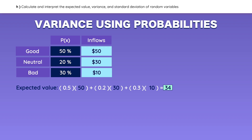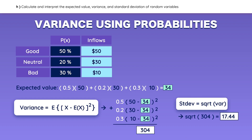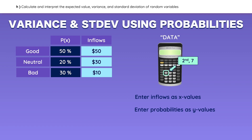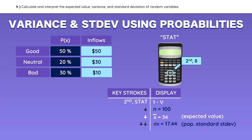To calculate the variance, you need to use the following formula. You can actually use the calculator instead — access the data function and enter the inflows as X values and the probabilities as Y values. Be careful: the probabilities must be entered as whole numbers, not decimals. Then access the STAT function and you'll see that everything has been calculated for you. You should see n equals 100 if you entered the probabilities correctly. The expected value is 34, the standard deviation is 17.44, and the variance can be found by squaring the standard deviation.